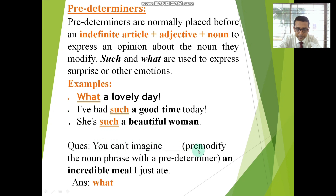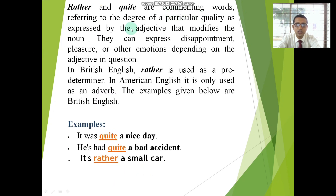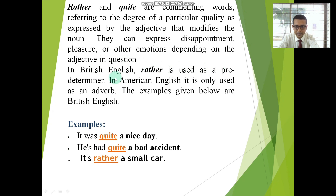You can modify the noun phrase with a pre-determiner. For example, 'What an incredible meal I just ate' — if we use 'what' here, we get a very sensible sentence. That is why 'what' is a pre-determiner here. 'Rather' and 'quite' are commenting words referring to the degree of a particular quality as expressed by the adjective that modifies the noun. They can express disappointment, pleasure, or other emotion. In British English, 'rather' is used as a pre-determiner.